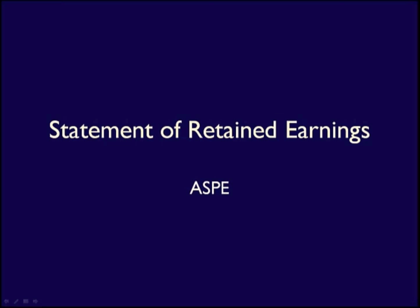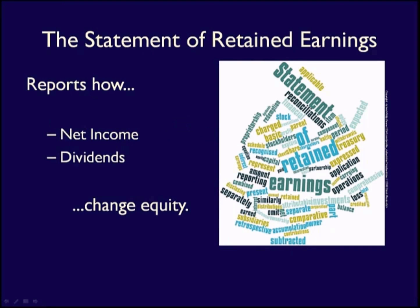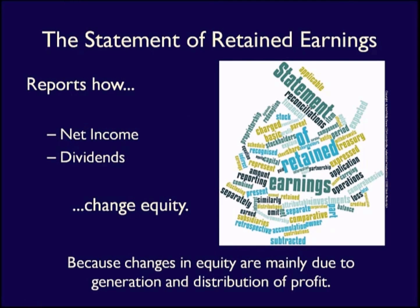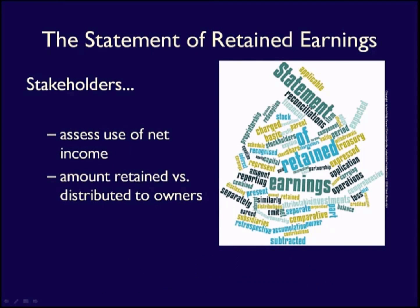After the income statement, businesses following ASPE must prepare a Statement of Retained Earnings. This statement reports how profits and dividends have affected equity. It is used because the majority of changes in equity are due to the generation and distribution of earnings. Information from this statement helps stakeholders assess a business's use of profit — how much is retained by the business for future growth, and how much is distributed to the shareholders.